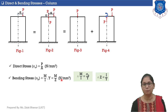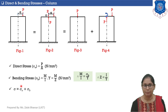The unit of bending stress is N/mm², similar to direct stress. Whenever a column section is subjected to eccentric load, the total stress developed is equal to direct stress σ₀ plus bending stress σB.